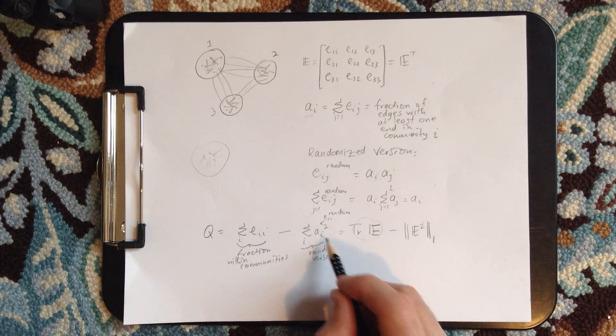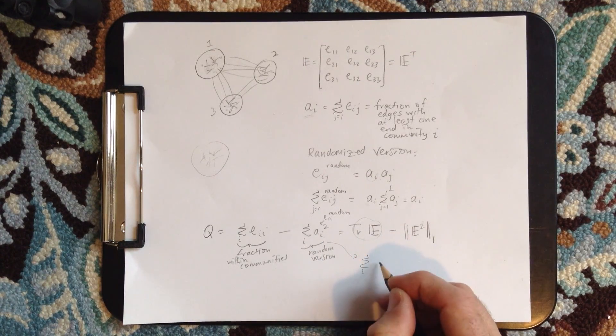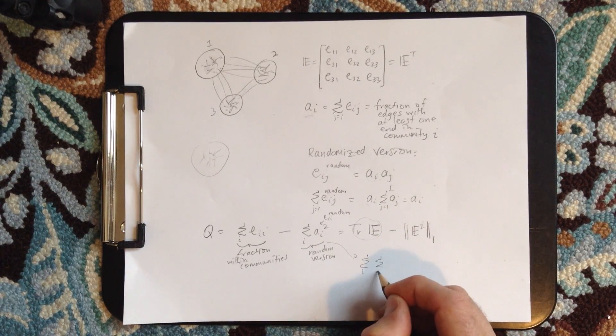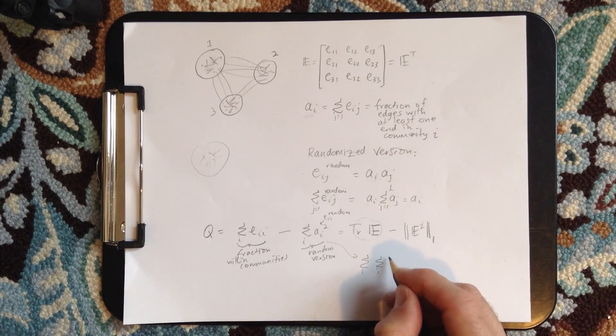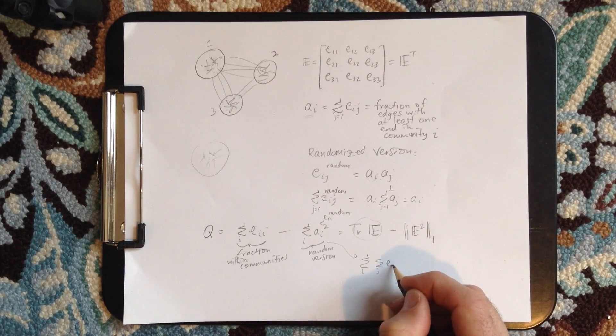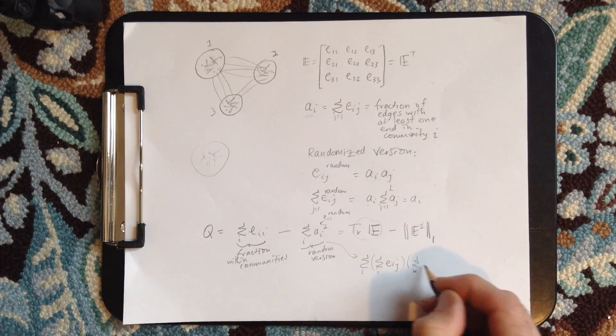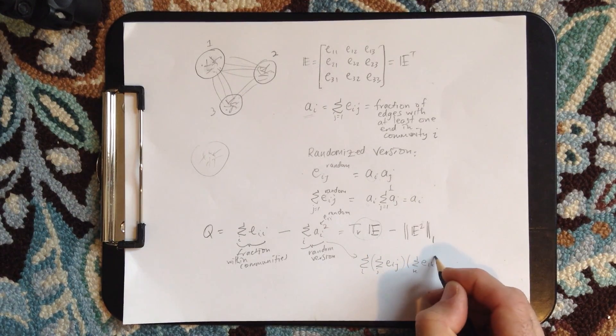So this is simply the trace of E. This guy, we've seen this before. So it's sum of I, so each one we can write like this. Let's write as J, E IJ, that's the first guy. Let's make it a K, the IK here.